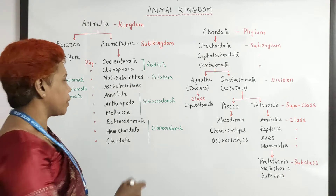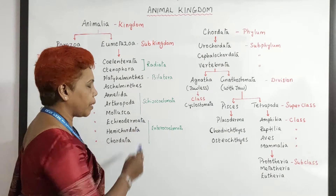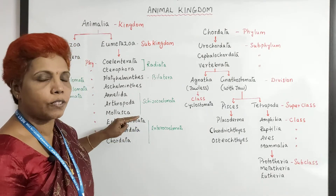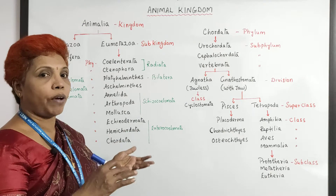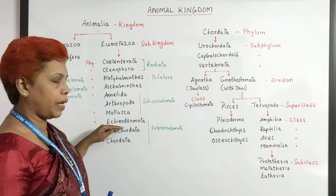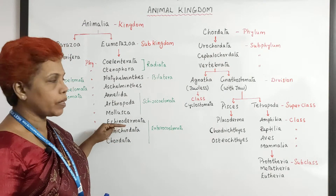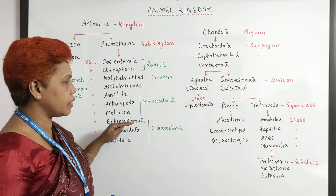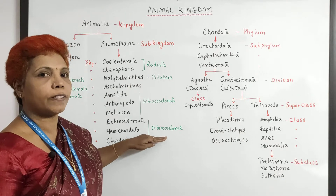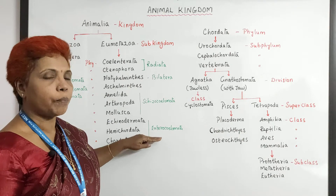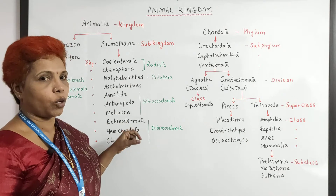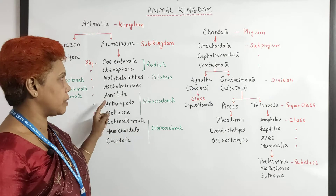But still, Echinodermata — the body is radially symmetrical. In spite of having a primitive symmetry, it is placed among the bilaterally symmetrical group. The reason is it is enterocoelomate: the anus develops first in embryonic origin.